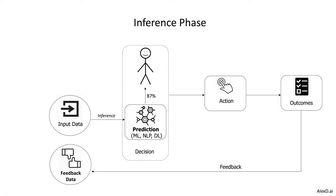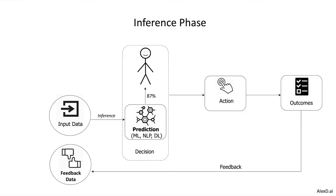After we have that data, we put it in production. During production, new data comes in — we call this the input data — and we make a prediction. We infer on top of this input data, using the model to create a prediction, and someone takes a decision.